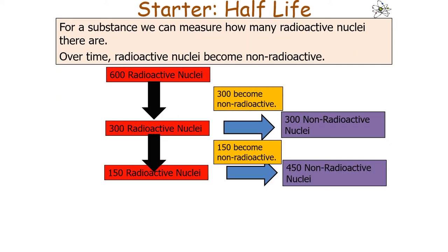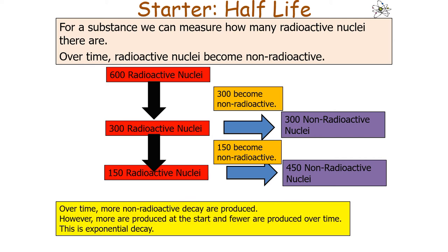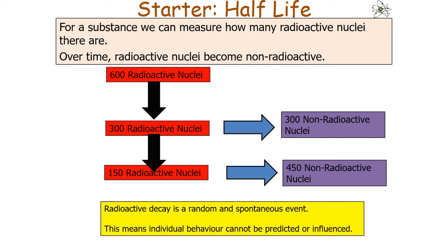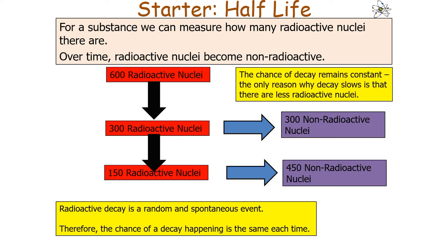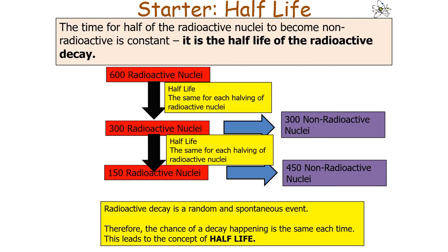For a substance, we can measure how many radioactive nuclei there are; over time the radioactive nuclei become non-radioactive via decay. More non-radioactive nuclei are produced at the start and fewer over time, because this is exponential decay. Radioactive decay is random and spontaneous, meaning individual nuclear behaviour cannot be predicted nor influenced. The chance of decay remains constant, which is why decay slows over time — there are fewer radioactive nuclei remaining, so fewer decay, but the time it takes to halve remains the same.